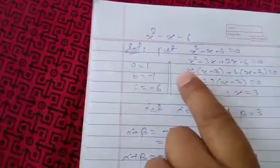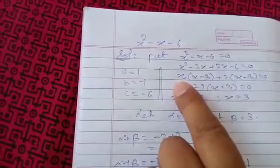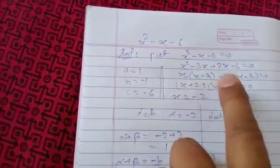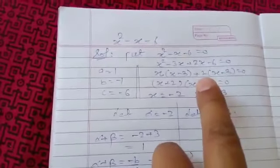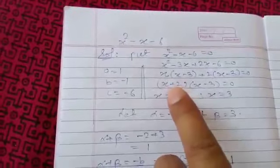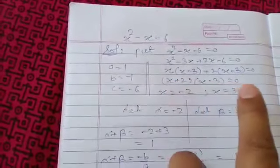Now take x common from first two terms. So we will get x(x - 3) + 2(x - 3) = 0. So this will be (x + 2)(x - 3) = 0.